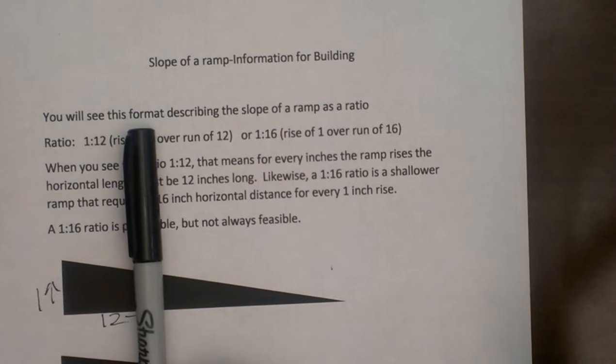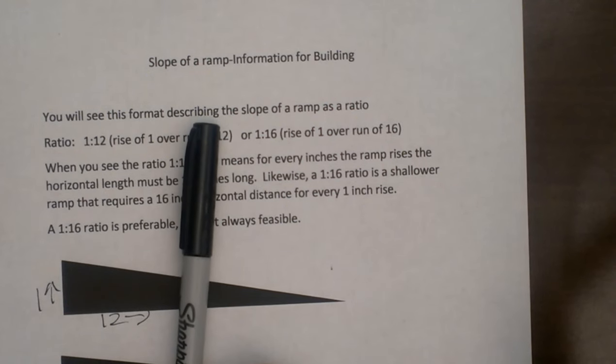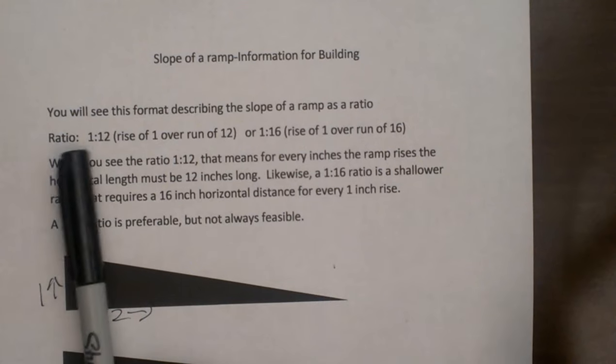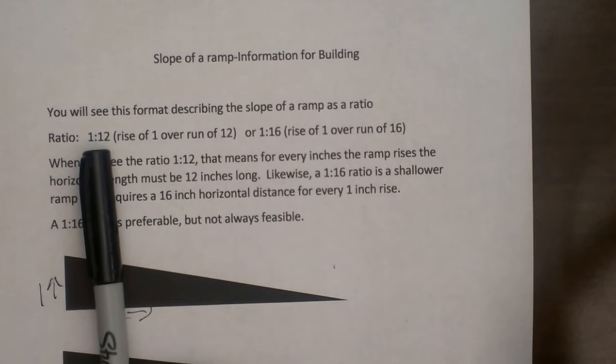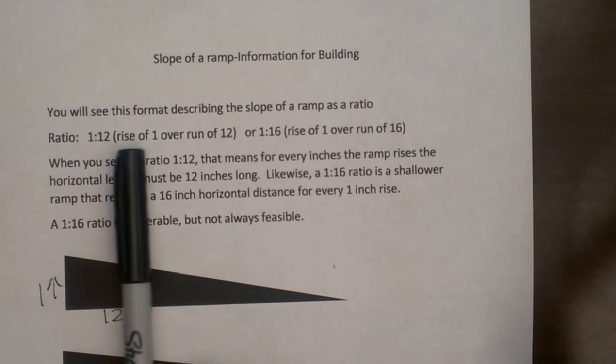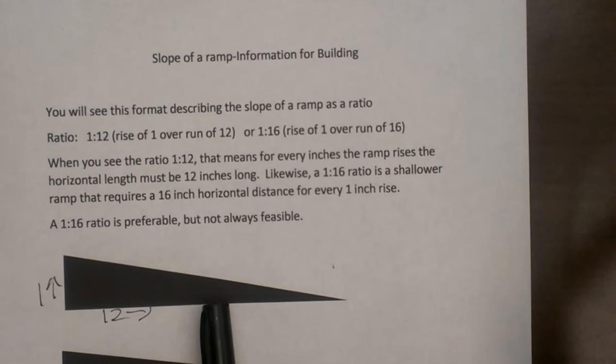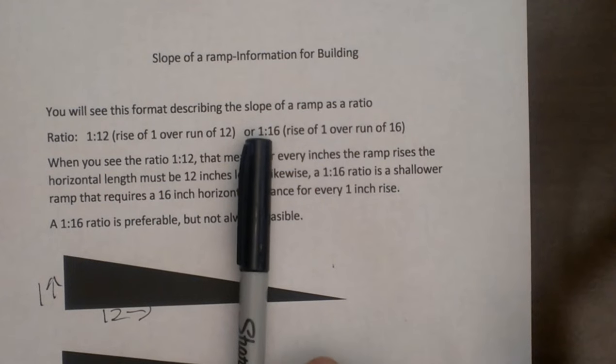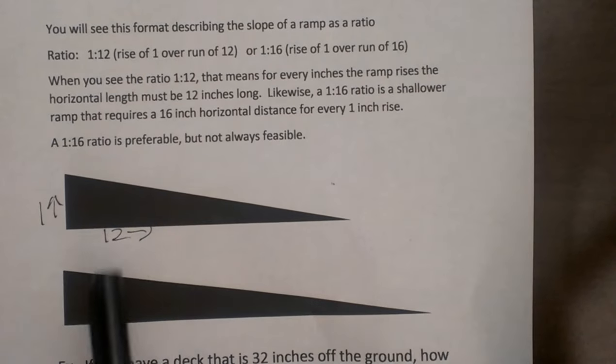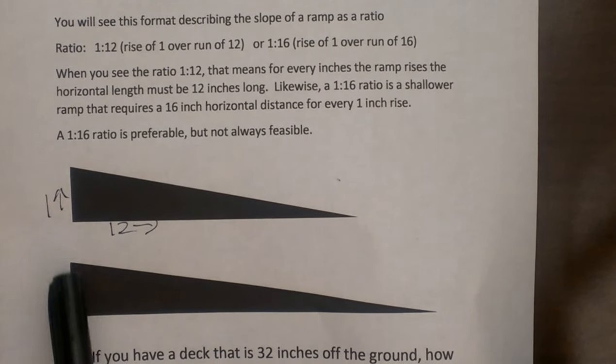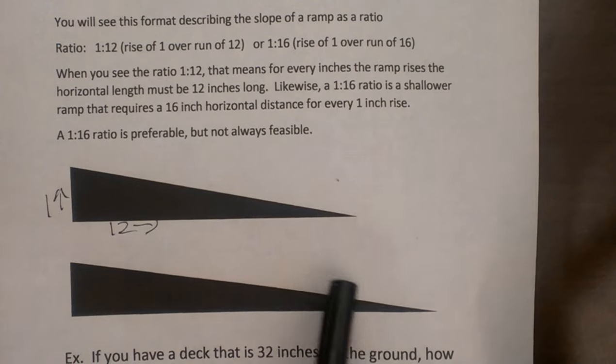First you are going to see the format describing the slope of a ramp as a ratio. Sometimes the ratio is going to be 1 to 12, which means the rise vertically of 1 to a run horizontally of 12, or sometimes you will see it as 1 to 16. For every inch you rise, you are going to run 16 inches.